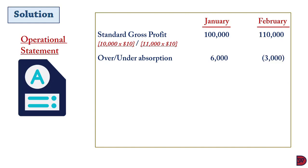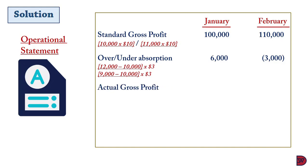There was an over absorption of six thousand dollars in January and under absorption of three thousand dollars in February. Over absorption is a plus because they produced more than budgeted — twelve thousand versus ten thousand budgeted — so the extra two thousand units absorbed all overhead, meaning they bear no fixed cost, boosting profit. In February, they produced only nine thousand against ten thousand budgeted, so the cost was spread over fewer units, causing under absorption. This leads to actual gross profit of one hundred and six thousand dollars for January and one hundred and seven thousand dollars for February.